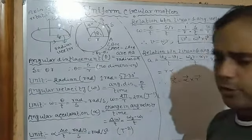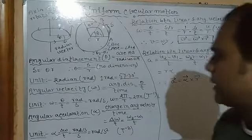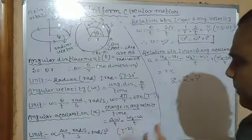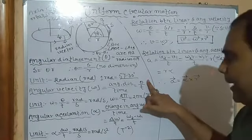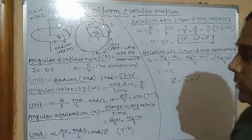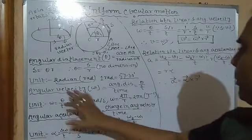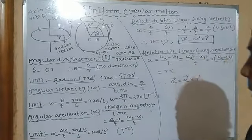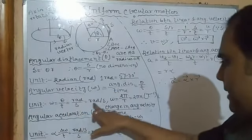Now, angular velocity. Just as linear velocity is the rate of change of linear displacement, angular velocity is the rate of change of angular displacement — that is theta by t. It means the angle subtended by a particle at the center of a circle per unit time. Angular velocity is generally denoted by the symbol omega (ω), and its unit is radian per second.